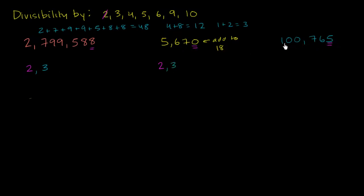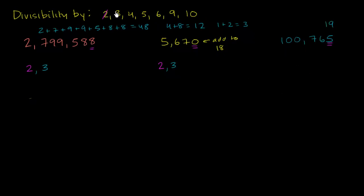Finally, let's add up the digits of the third number: 1 plus 0 plus 0 plus 7 is 8, plus 6 is 14, plus 5 is 19. The digits sum to 19, which is not divisible by 3. So we're not going to write a 3 there — it's not divisible by 3.